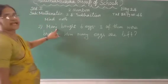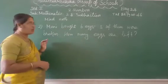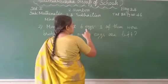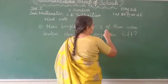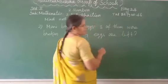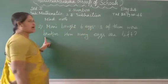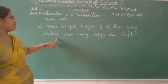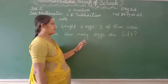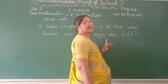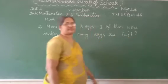Money bought — B-O-U-G-H-T — six eggs — E-G-G-S. Three of them — T-H-E-M — were broken — B-R-O-K-E-N. How — H-O-W — many eggs — E-G-G-S — are left — L-E-F-T?